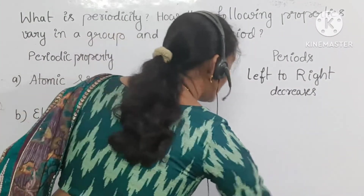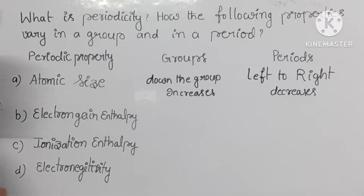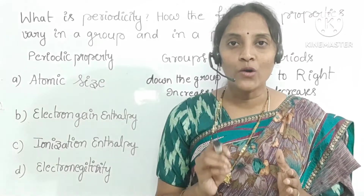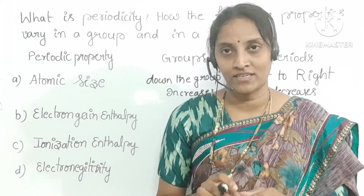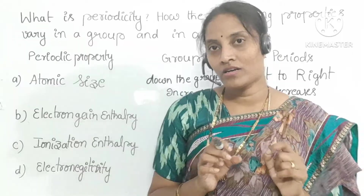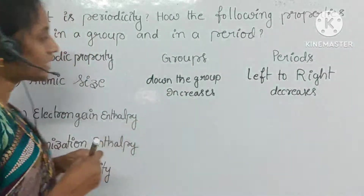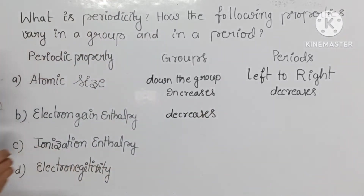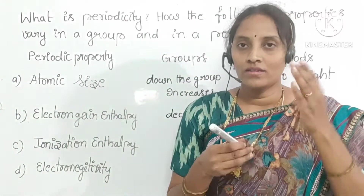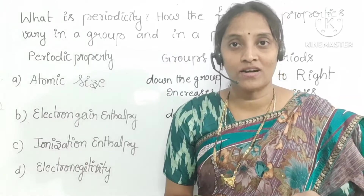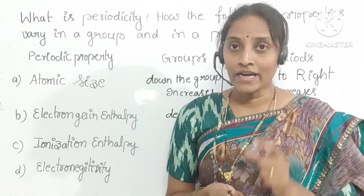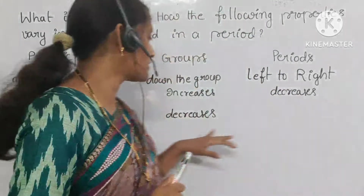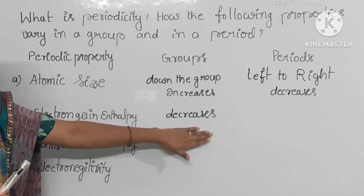The next periodic property is electron gain enthalpy — the energy released when we add one electron to the outer shell of an isolated gaseous atom. In groups, electron gain enthalpy decreases down the group, because atomic size increases and screening effect increases, meaning less force of attraction towards the outer shell, so less energy is released.